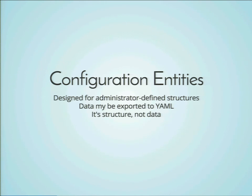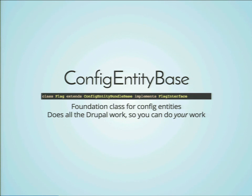Drupal 8 has two different kinds of entities — in Drupal 7 we only had one. In Drupal 8 we have configuration entities and content entities. A configuration entity is designed for administrator-defined structures. It may be exported to YAML — it lives in the database but may be exported and moved from site to site. Basically it's structure, not data. For our config entity, we derive from ConfigEntityBundleBase. It's the foundation class for configuration entities — it does all the Drupal work for us, so we don't have to copy it. We just extend from it.